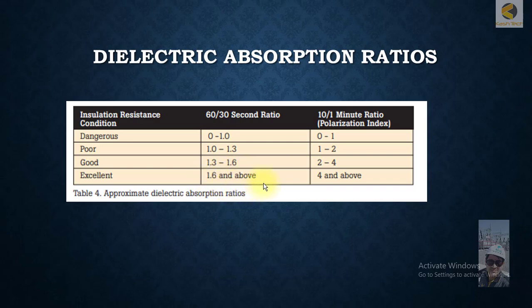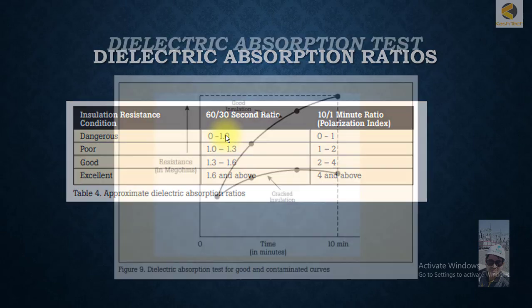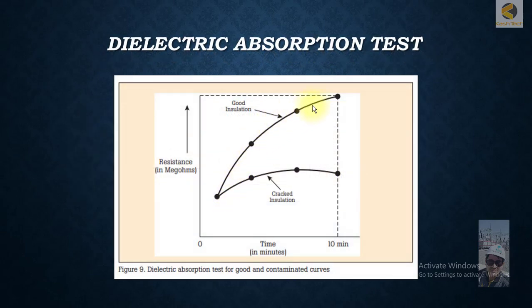This means the reading at 60 seconds is 1.6 times more than the reading at 30 seconds, meaning the resistance value is increasing, which indicates very healthy equipment condition.